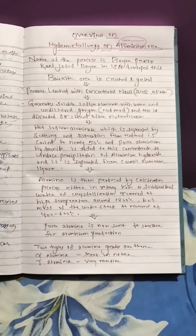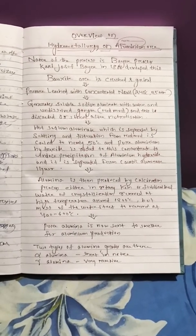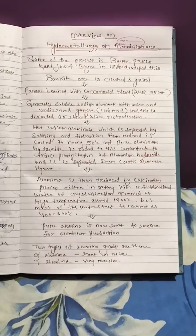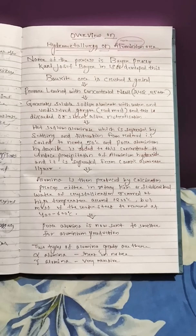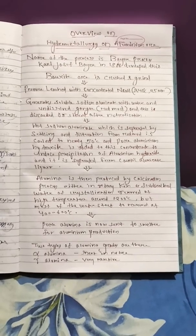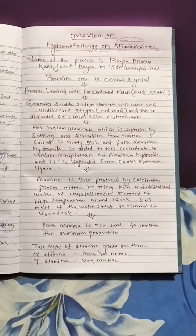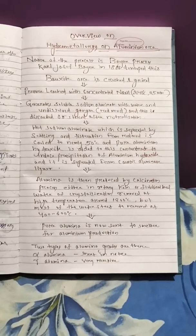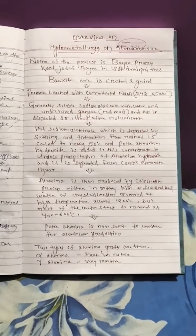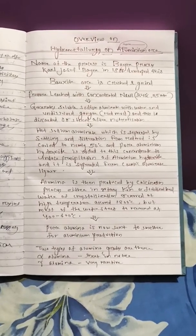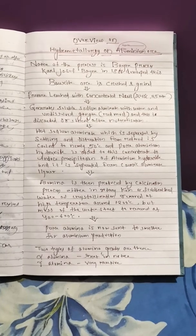The hot sodium aluminate, separated by settling and filtration from the red mud, is cooled to nearly 50°C. Pure aluminum hydroxide is added to this concentrate to induce precipitation, and the precipitated aluminum hydroxide is separated from the caustic aluminate liquor.